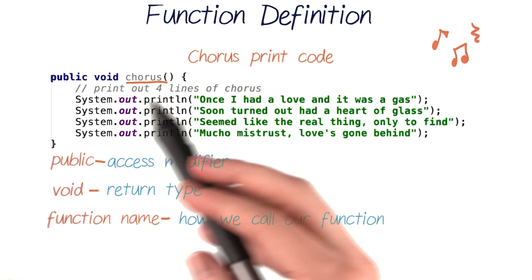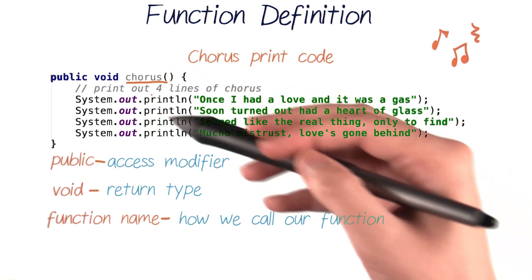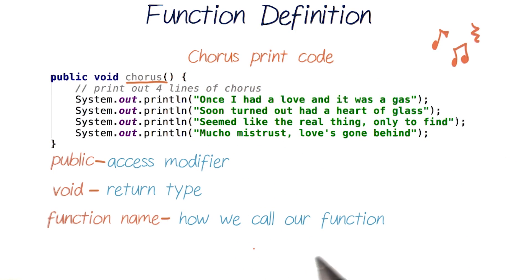After void, we just have the name of our function, chorus, followed by empty parentheses, which is how we can refer to and call our function.